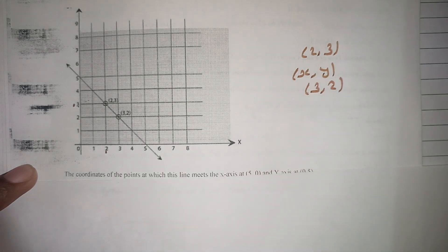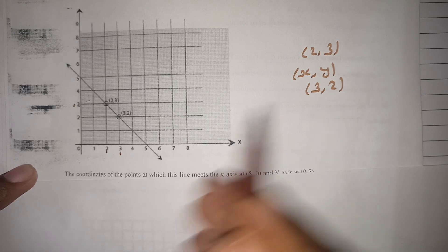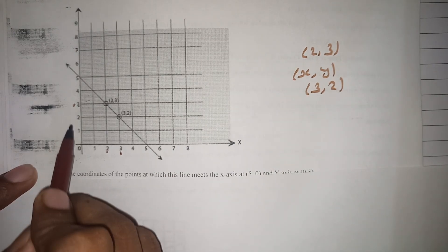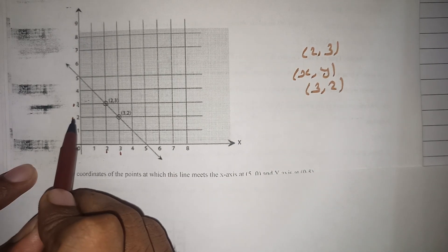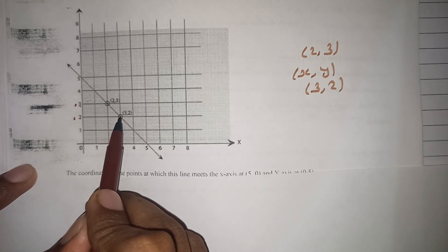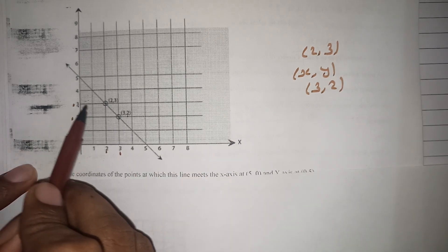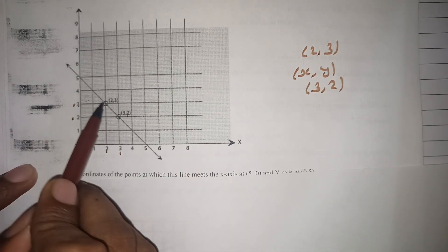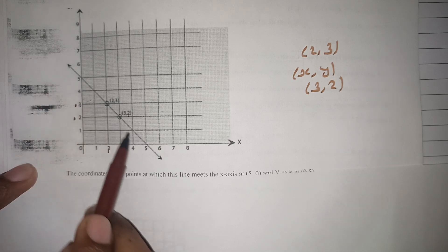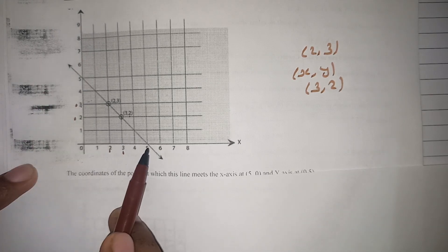Now the second point. So 3 on the x-axis and 2 on the y-axis. This is the line which passes through (2,3) and (3,2).